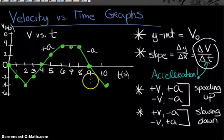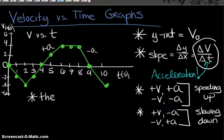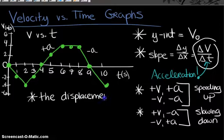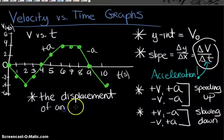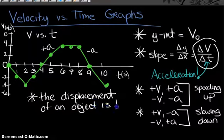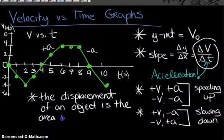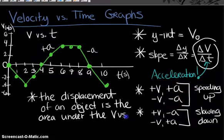One more important idea about velocity versus time graphs: the displacement of the object can be found from a V versus T graph. The displacement is equal to the area under the V versus T graph — sometimes called the area under the curve. We'll practice this with the example graph shown here.